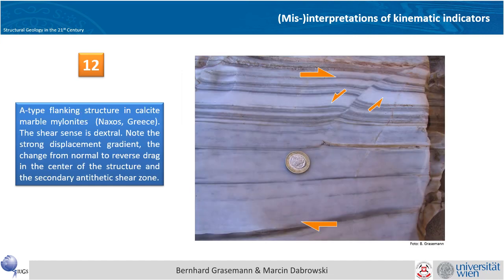This is a complicated structure — a flanking structure from Naxos where a cross-cutting element or slip surface shows an antithetic shear sense and has been rotated into the shear sense. Note the strong reverse drag here; overall this structure is an antithetic flanking structure giving you a top-to-the-right shear sense.